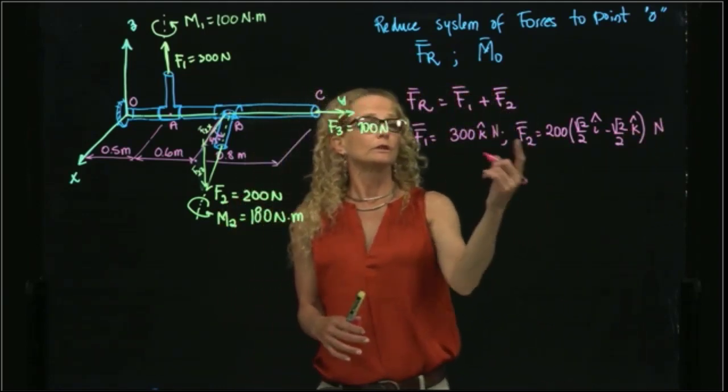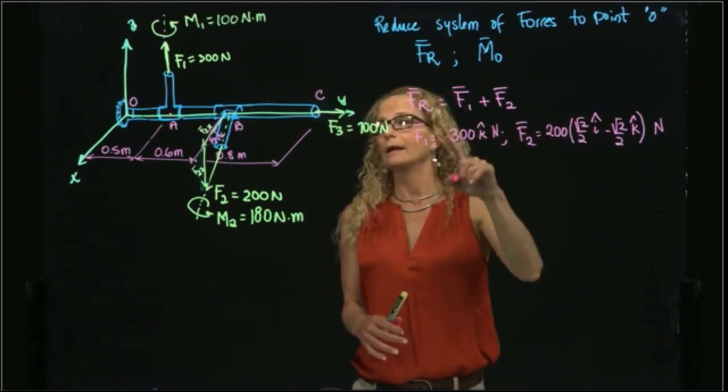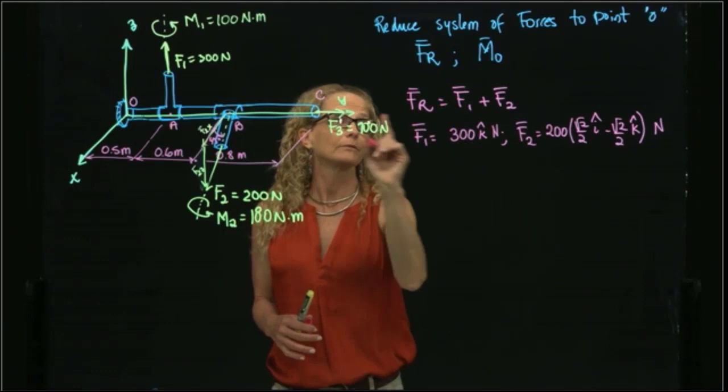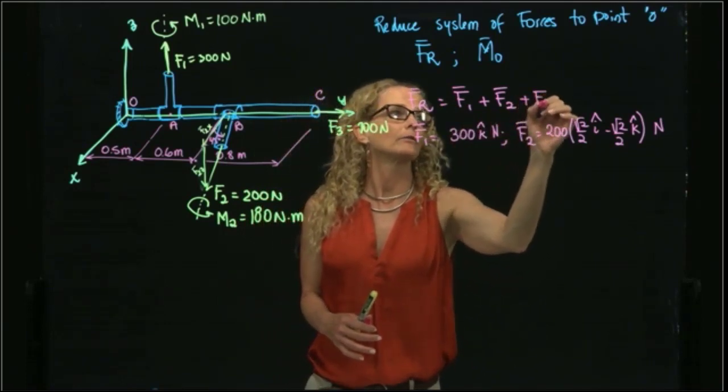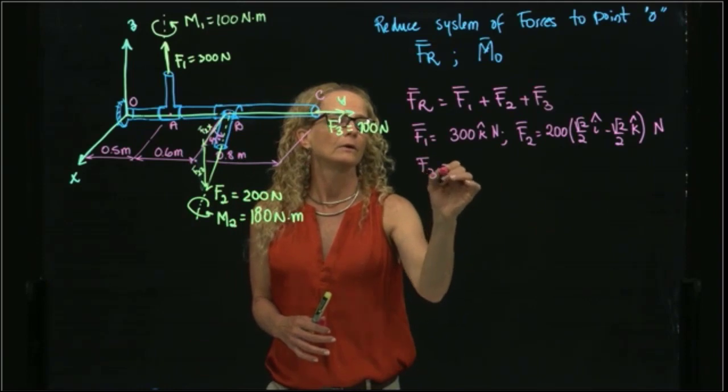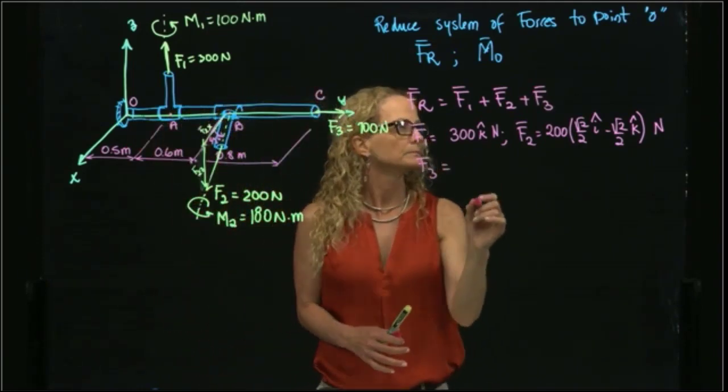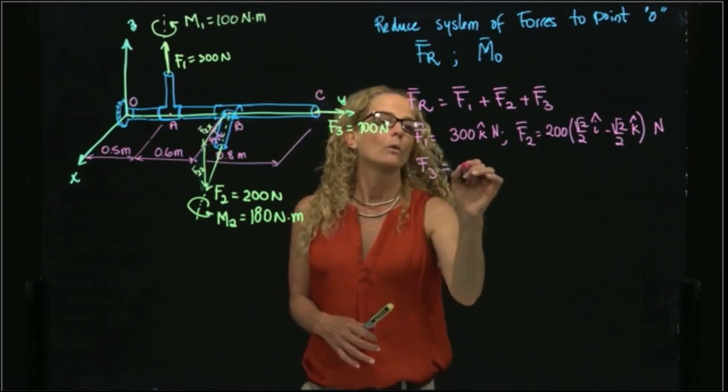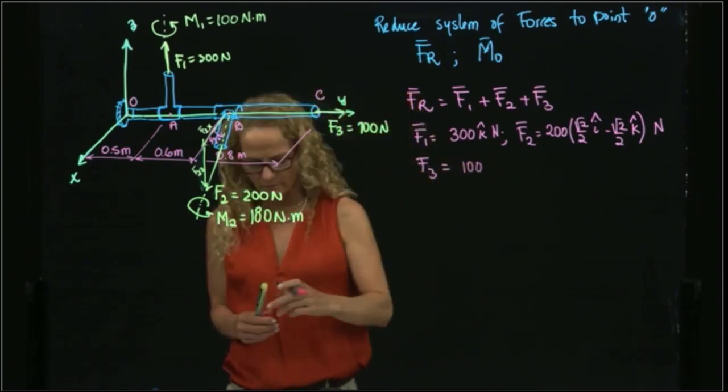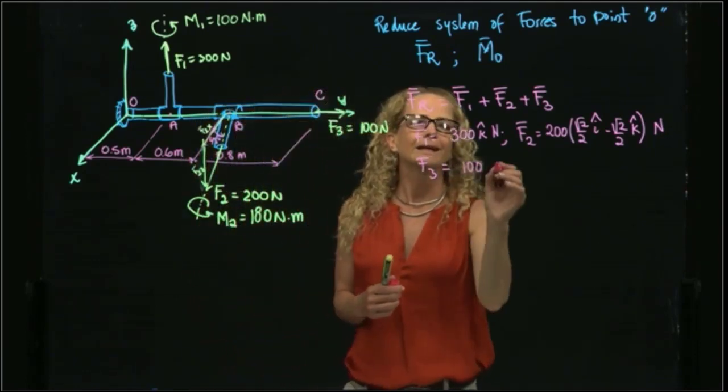If I add all these forces, I will have i direction, k direction, and I don't have j. Sorry about that, I forgot to include F3, and F3 has only direction in y, which is 100 newtons. So let me write this a little bit more clear. This is just 100 in j.